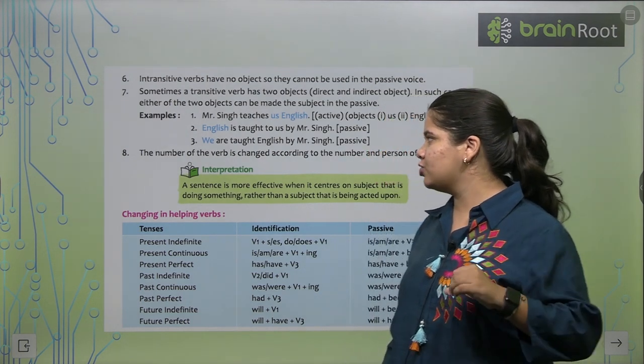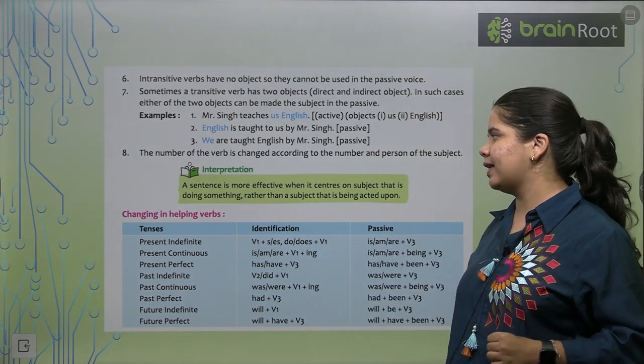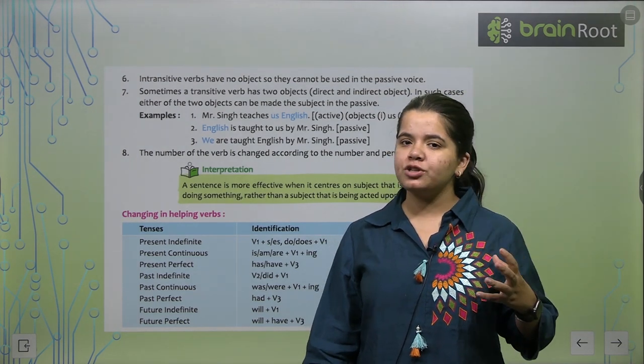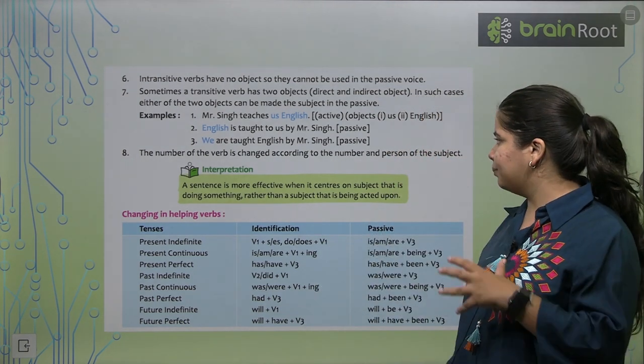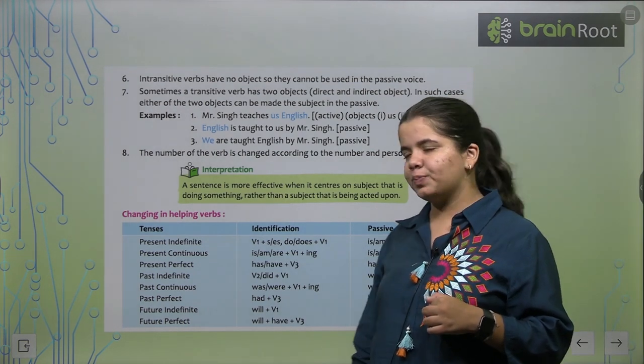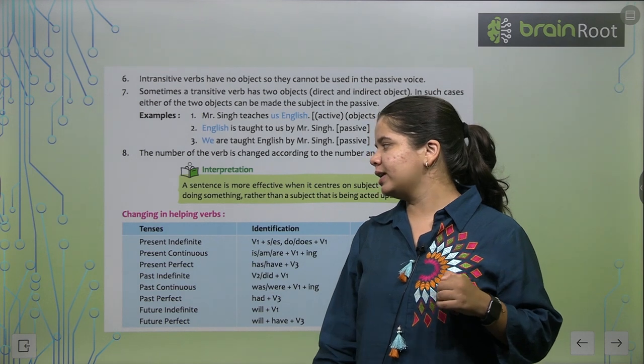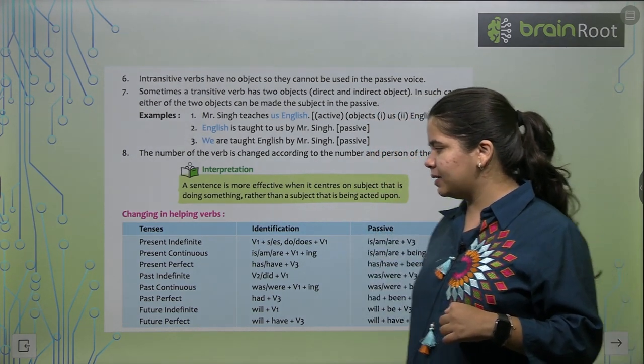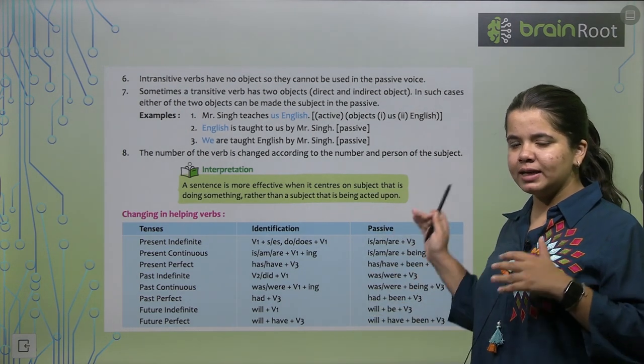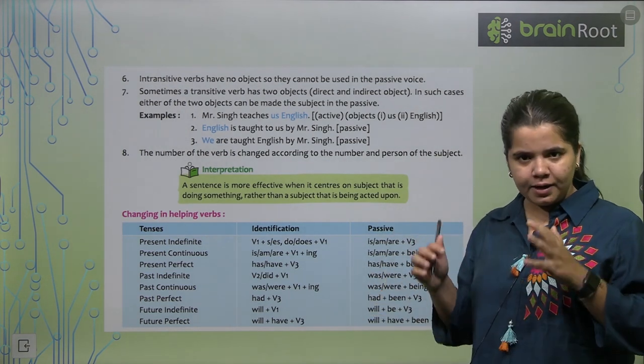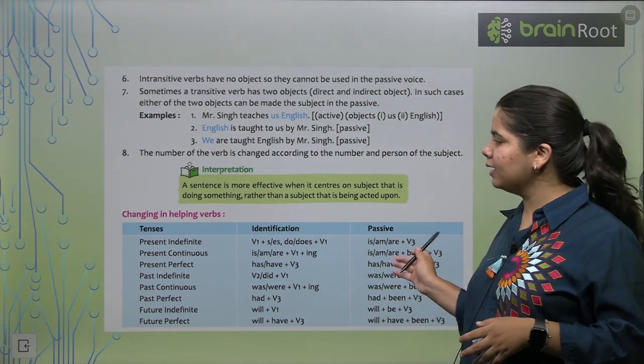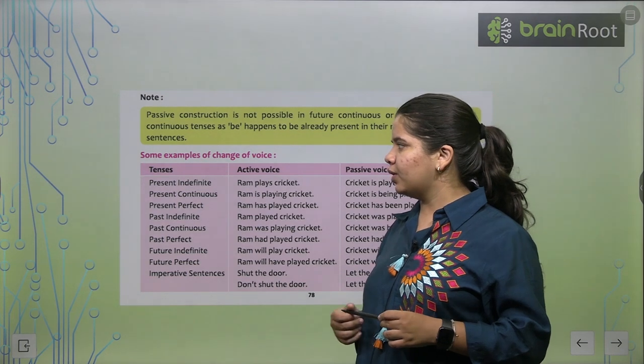Next, we'll see. The number of the verb is changed according to the number of person and the subject. So the number of the verb, on what basis will it change? It will change on the basis of number or person. I hope it's clear. Now, changing and helping verbs. Now this is a table. You can just read it yourself. These are just rules written that when you go from here to this tense, then what rule you have to apply. So this is just for your understanding. Please read it once.